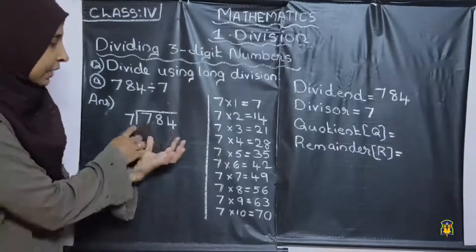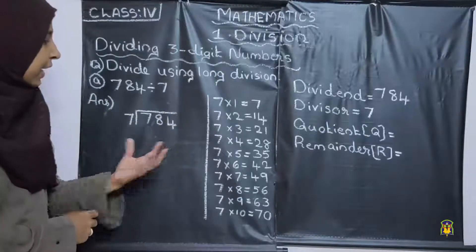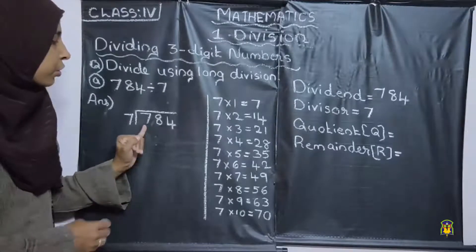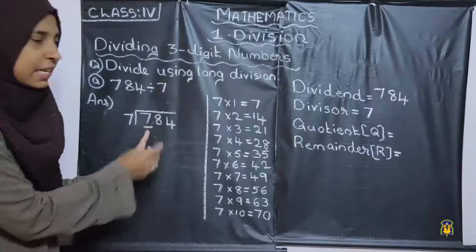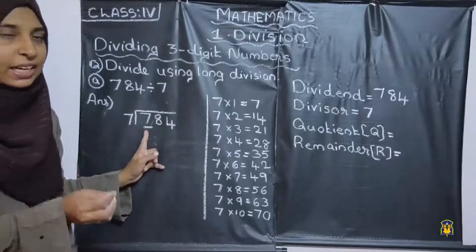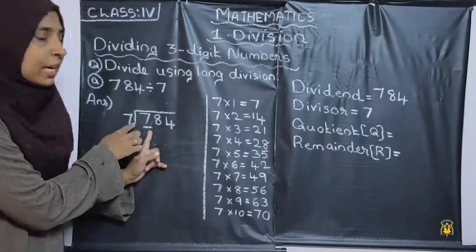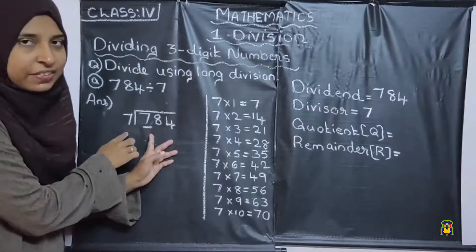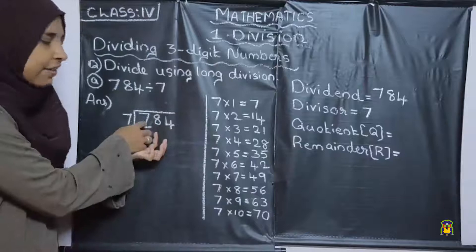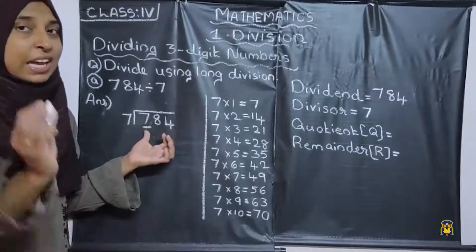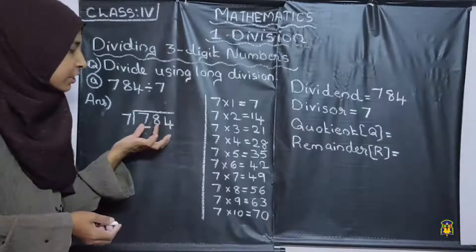First we want to write the numbers like this: 784 divided by 7. Then, first step — we want to take the first digit. The first digit is 7, and we check whether the first digit is greater than or equal to the divisor. The divisor is 7 and the first digit is also 7, so if the first digit is less than the divisor, then we want to take 2 digits.